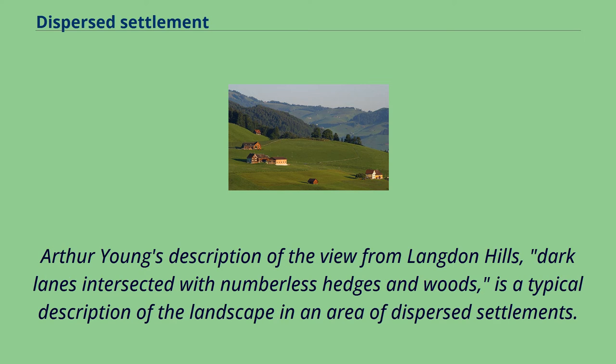Arthur Young's description of the view from Langdon Hills — 'dark lanes intersected with numberless hedges and woods' — is a typical description of the landscape in an area of dispersed settlements.